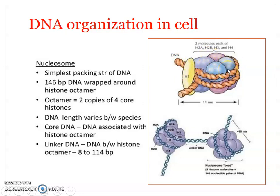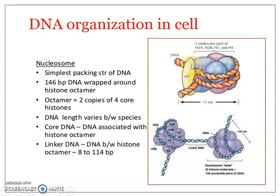The histone core is formed of eight histone proteins — two molecules each of H2A, H2B, H3, and H4. These four histone proteins are found in two sets, and together they form the histone core. The length of DNA wrapped around is almost 146 base pairs. This structure is known as a nucleosome. The DNA strand is placed precisely on this octamer with the help of another histone protein, H1.